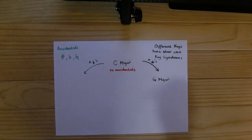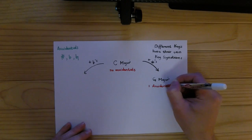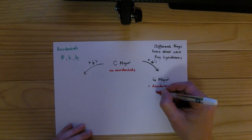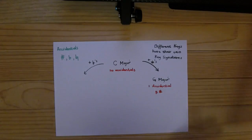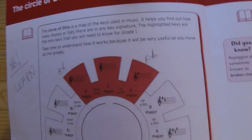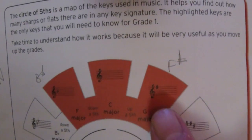G major has one accidental, and that is F sharp. If we have a close look at the right hand, we'll see that there is our F sharp.